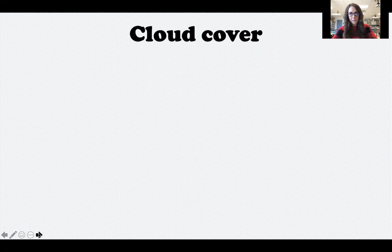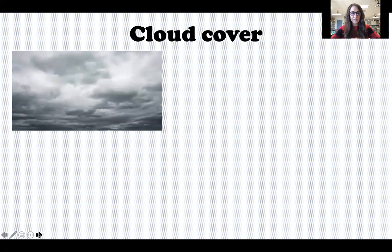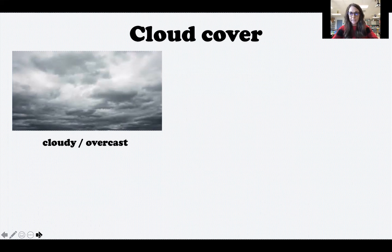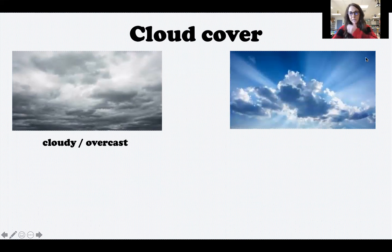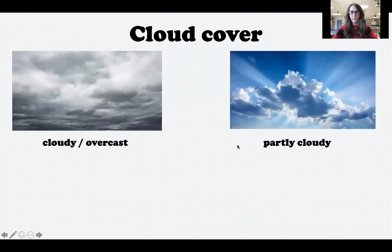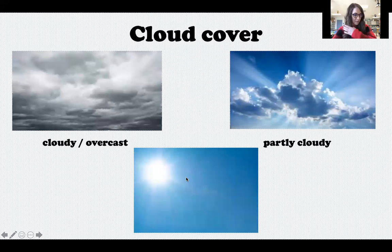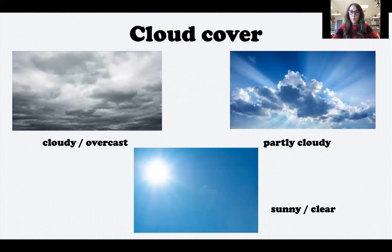One part of the weather is cloud cover, which means how much of the sky is covered in clouds. Sometimes the whole sky is covered in clouds — we call that cloudy or overcast. Other times part of the sky has clouds and part is blue and sunny — that's called partly cloudy. And other times the sky is very sunny, bright, and blue with no clouds at all — that's a sunny or clear day.